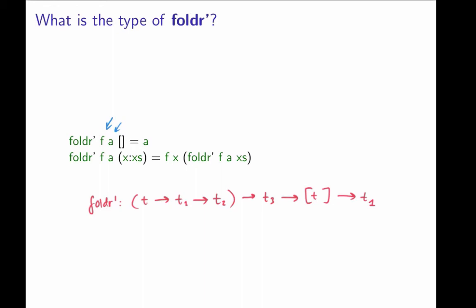Now, what about t3 then? Well, let's see here. This is the type of the initial value a. But that's also what appears here. And a has type t1. So this t3 is just t1. So this is t1.